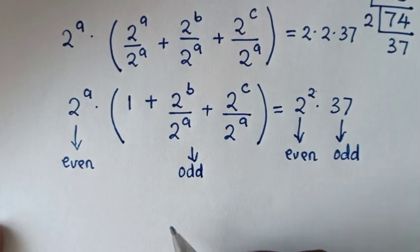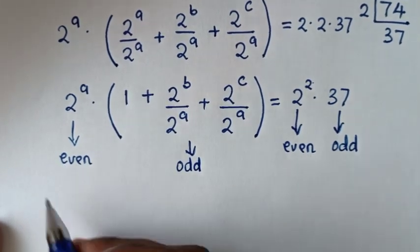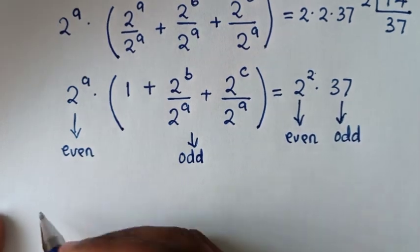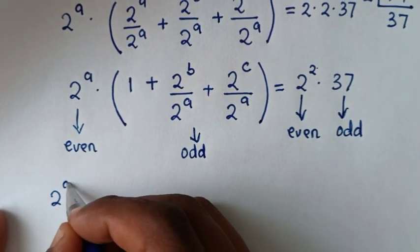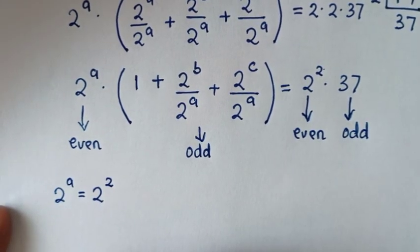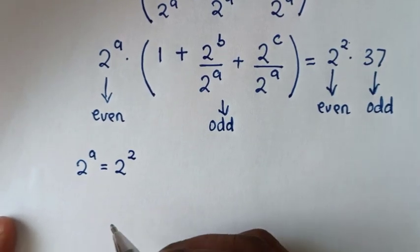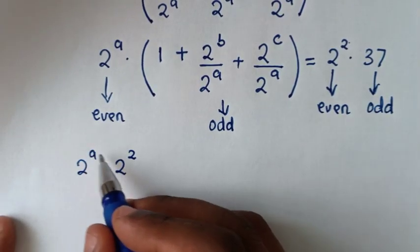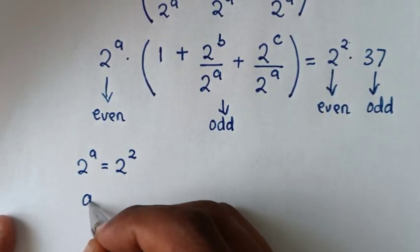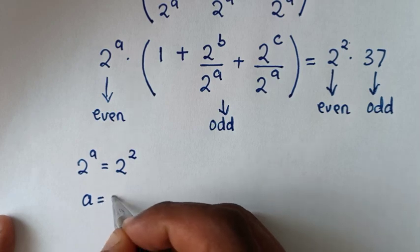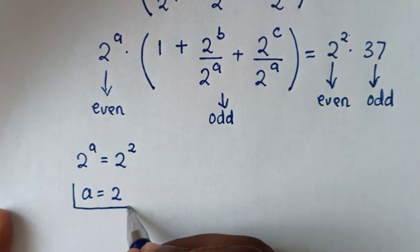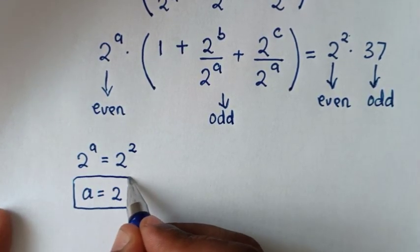So we will compare the even number with even. It will be 2 power a is equal to 2 power 2. They have the same base, so we compare the powers: a is equal to 2. So a equals 2, and this is the value of a from our problem.